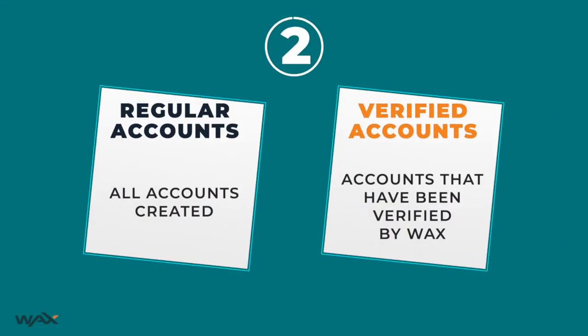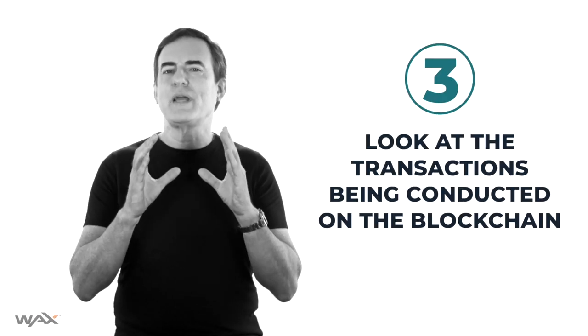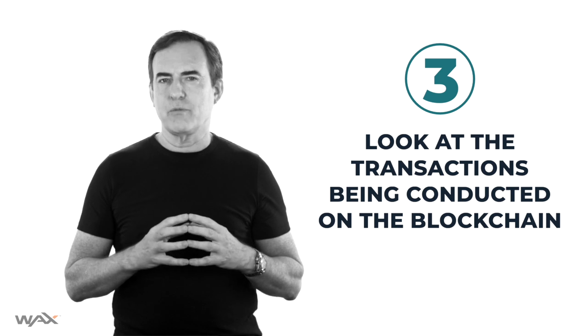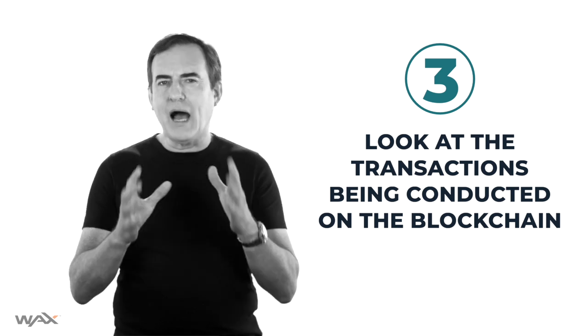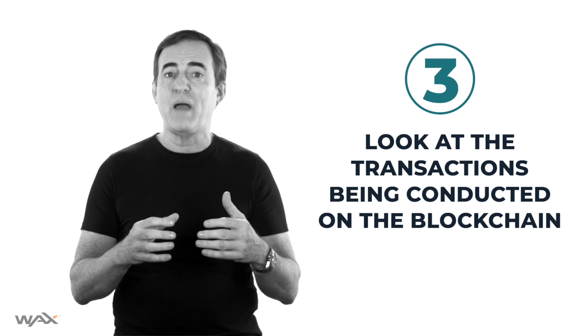Also look at the average number of accounts that are active each day. Since account activity can be faked, at WAX we distinguish between regular accounts and verified accounts. A verified account has some form of personal identifying information attached, meaning it has a higher likelihood of having been created by a real person and not a bot. Next, look at the transactions being done on the blockchain — obviously the more transactions, the better, if you're trying to measure activity.